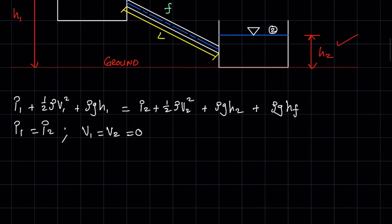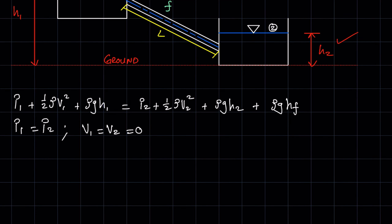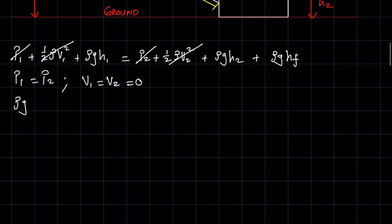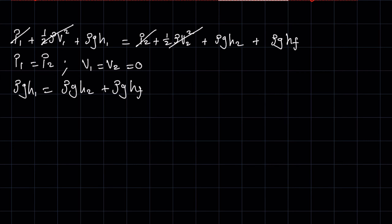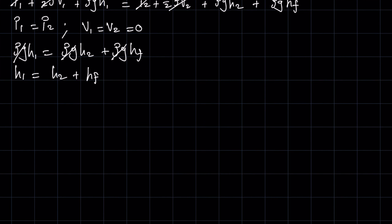Rewriting Bernoulli's equation: p1 and p2 cancel, and the velocity terms cancel, leaving: ρgh1 = ρgh2 + ρg·hf. The common factor ρg cancels from all three terms, giving: h1 = h2 + hf. Solving for hf: hf = h1 − h2.